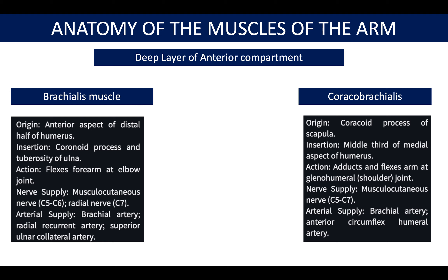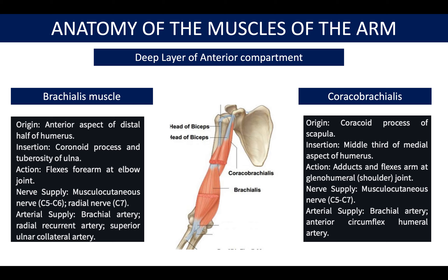The coracobrachialis, located more medially and superiorly, originates from the coracoid process and inserts into the medial half of the humerus. It is supplied by the musculocutaneous nerve, and its arterial supply includes the brachial artery and the circumflex humeral artery. In this image you can see the coracobrachialis, the biceps brachii cut away, and the brachialis muscle.